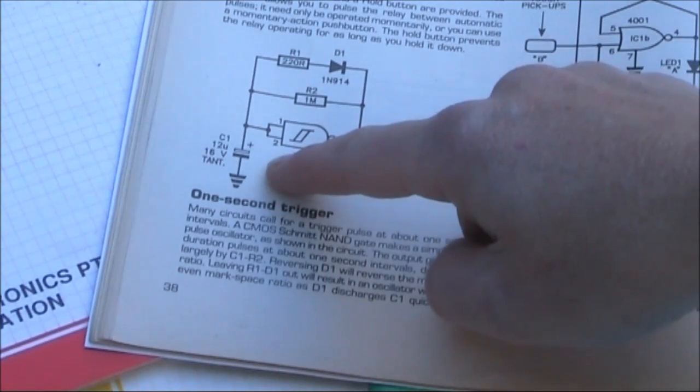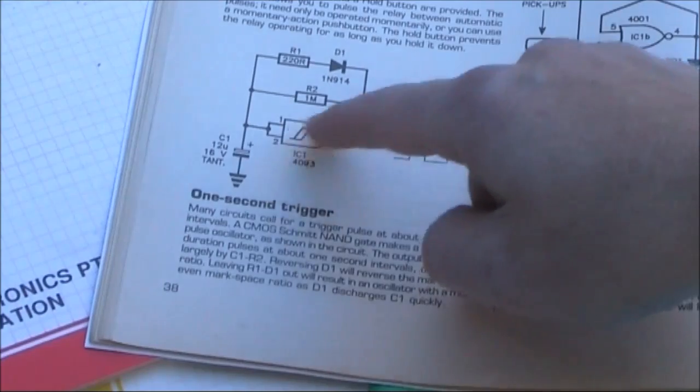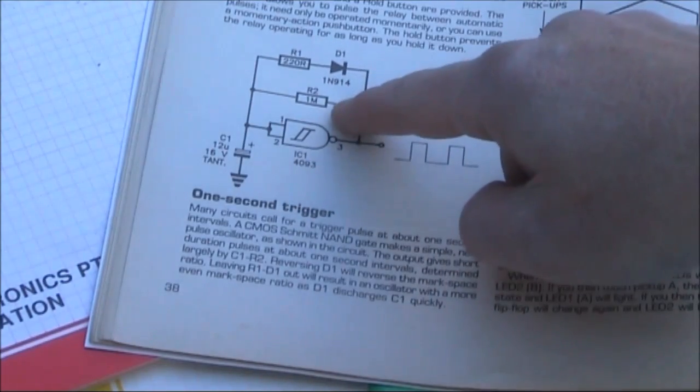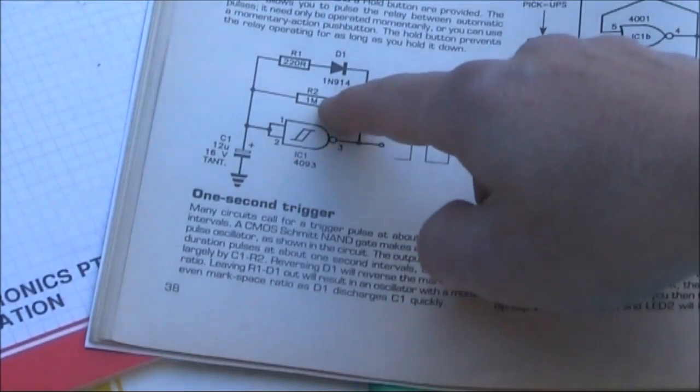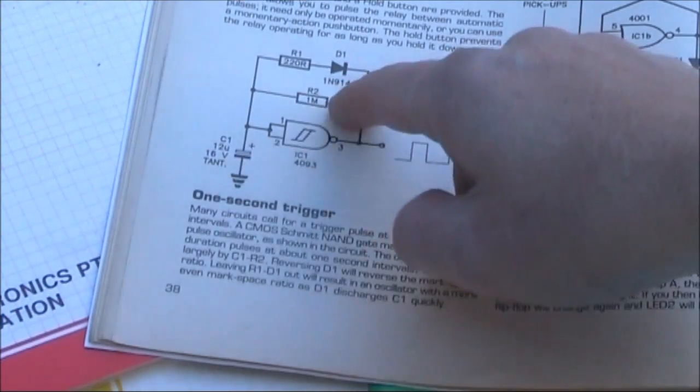C1, the bigger the capacitance, the longer the timing, the lower the frequency, and the same with R2. You make the values less and the frequency increases.